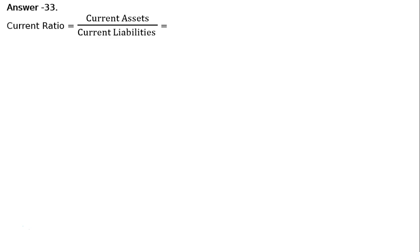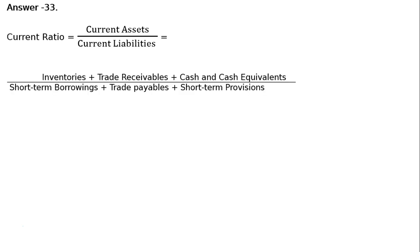Current ratio is equal to current assets upon current liabilities. Current assets are: inventories plus trade receivables plus cash and cash equivalents, divided by current liabilities, which are short-term borrowings, trade payables, and short-term provisions (provision for tax).